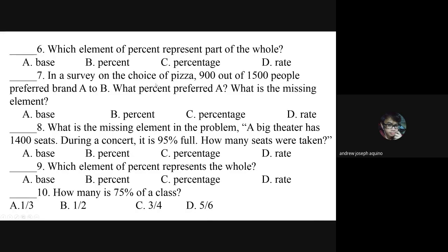Number six: which element of percent represents part of the whole? Letter A: base. Letter B: percent. Letter C: percentage. Letter D: rate. Number seven: in a survey on the choice of pizza, 900 out of 1500 people preferred Brand A to B. What percent preferred A? What is the missing element? Letter A: base. Letter B: percent. Letter C: percentage. Letter D: rate.